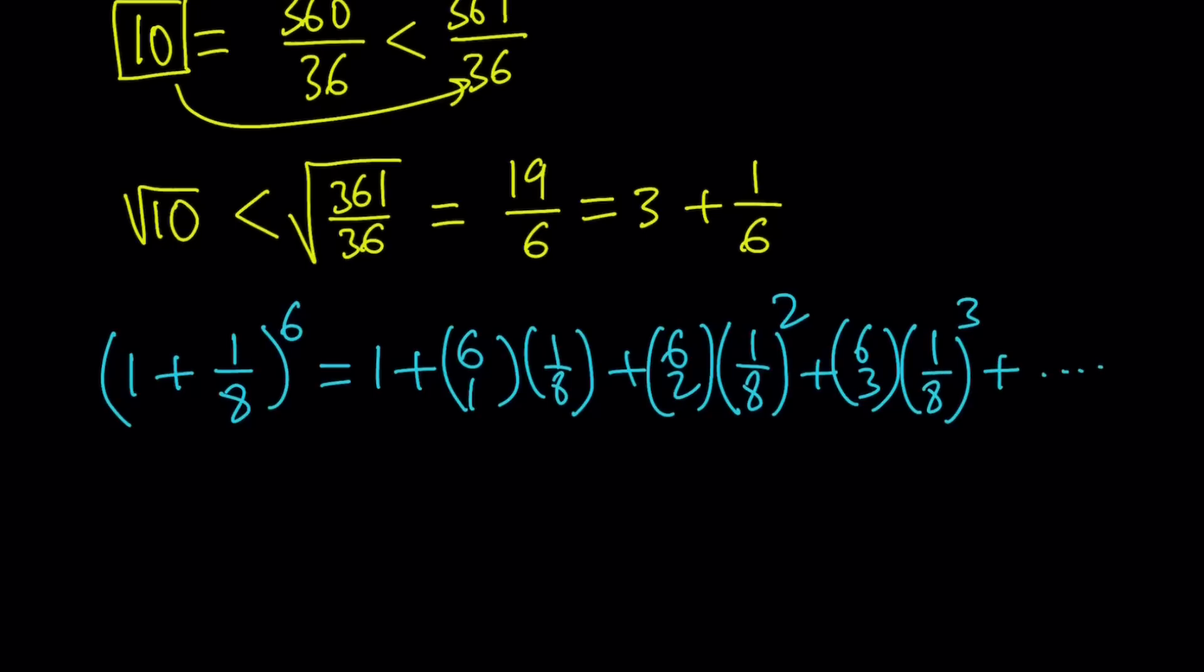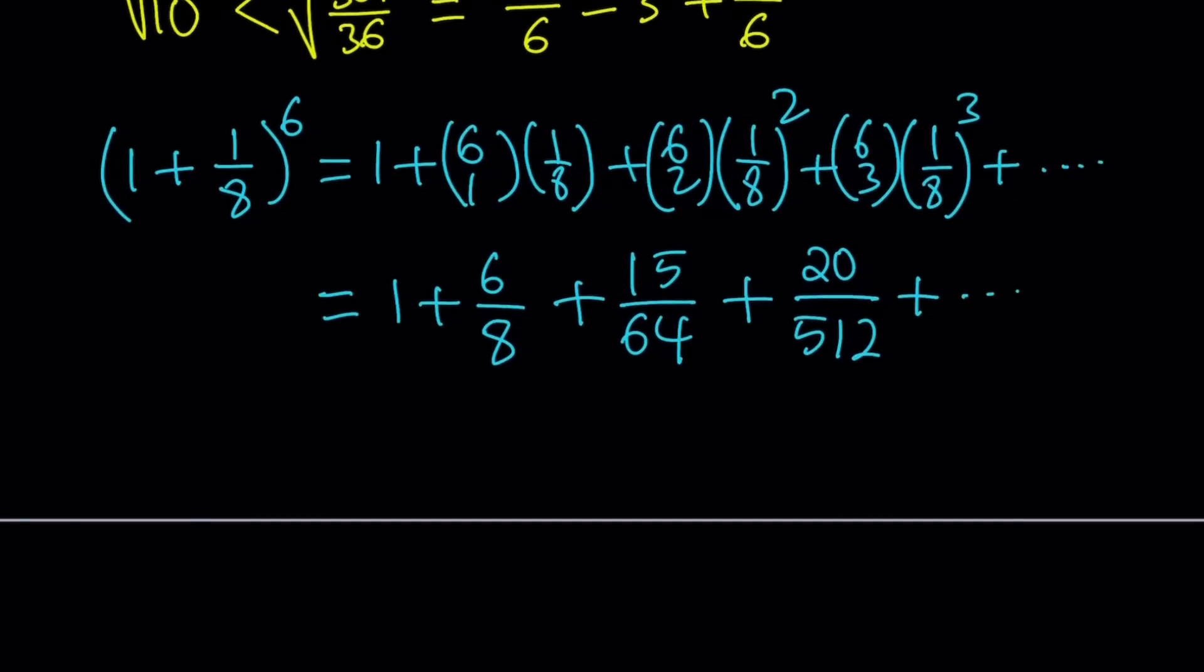Okay. So let's go ahead and evaluate these values. 6 choose 1 is 6 and choose 1 is always n. Multiply them together, you're going to get 6 over 8. Let's leave it at that. Don't simplify it. And that is going to be added to 6 choose 2, which is 15 multiplied by 1 over 64, which is 15 over 64. And finally, this one is going to give us 20 over 512. And the rest, again, we're not going to need. So far, so good, right?